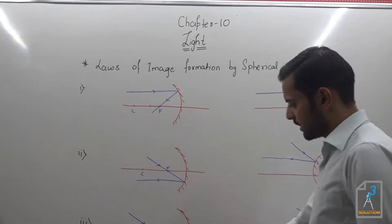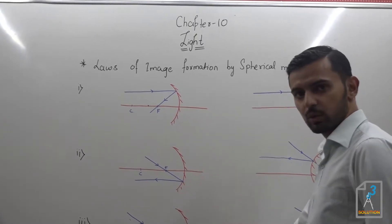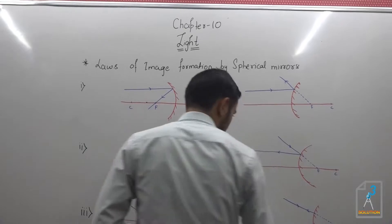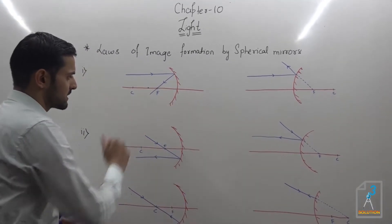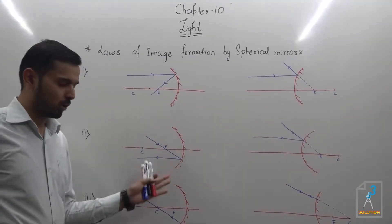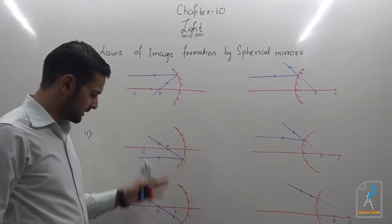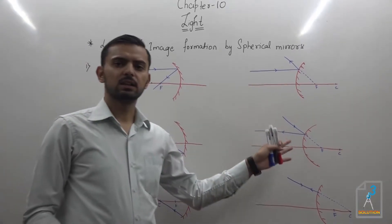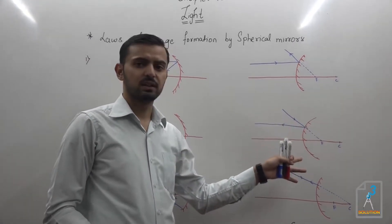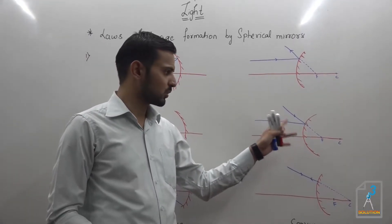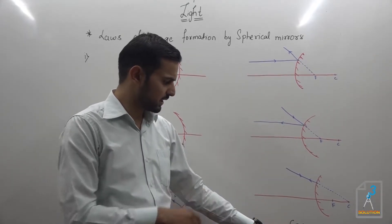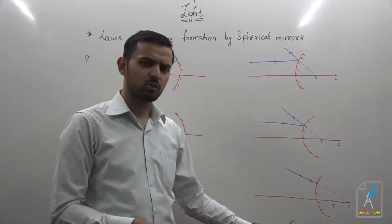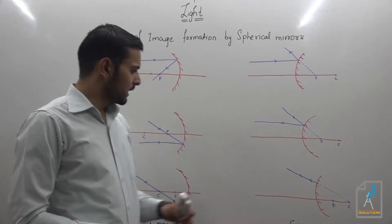I have a concave mirror here and a convex mirror here. You can easily see this is curved inward — all these mirrors are curved inwards; these are the concave mirrors. The ones curved outwards with a reflecting surface outward are considered to be convex mirrors.